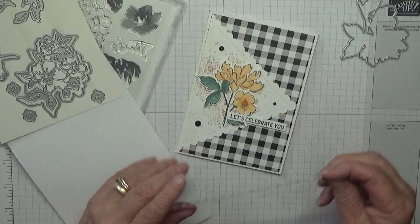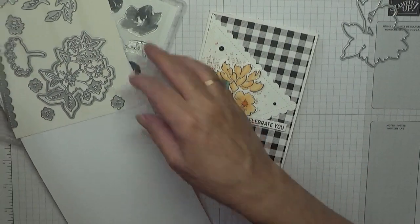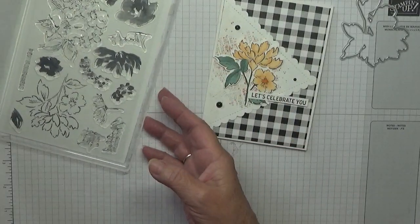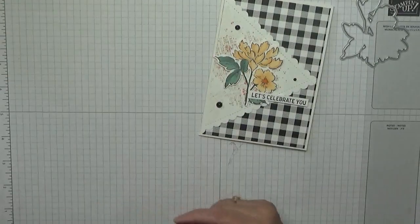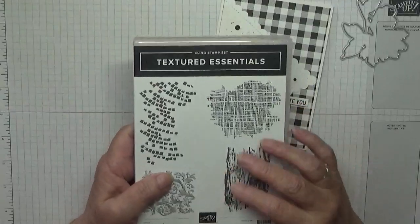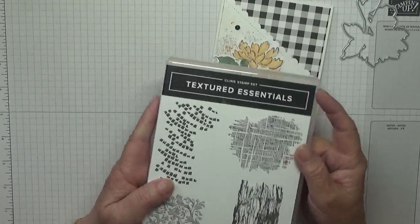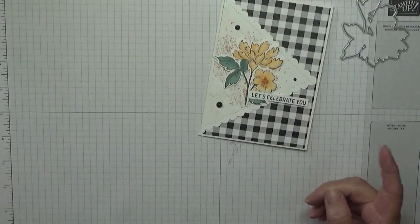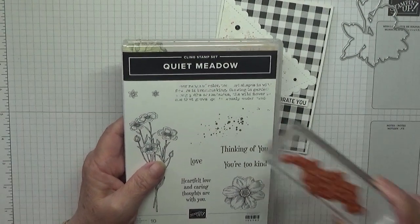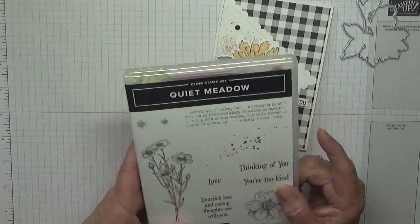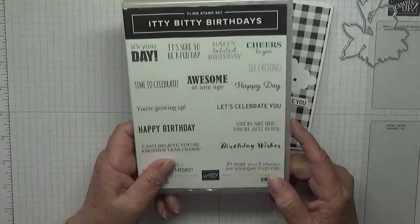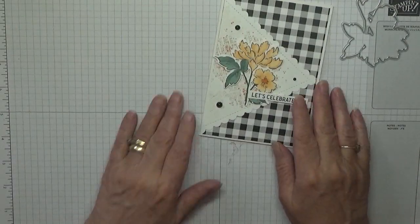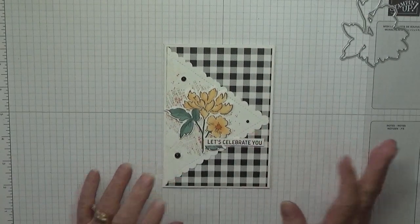For the background I've just used Textured Essentials. I know this is retired but you can use any background you want. Also for the background, Quiet Meadow for the splatter dots. I've just used that for the sentiment, let's celebrate you. This is also a retired stamp set so I needed the sentiment, that's why I've used it.